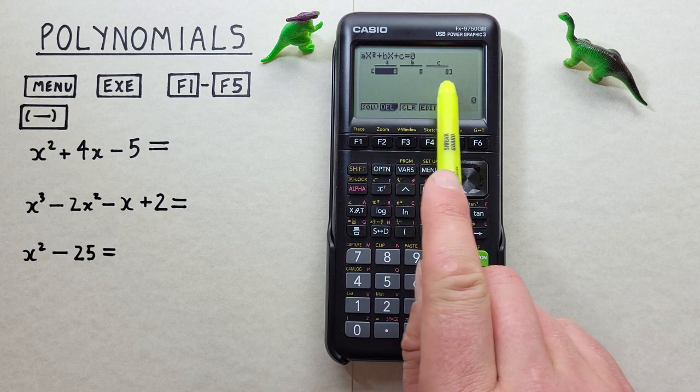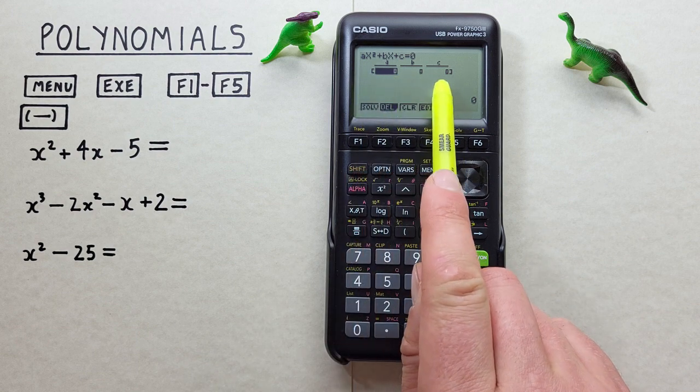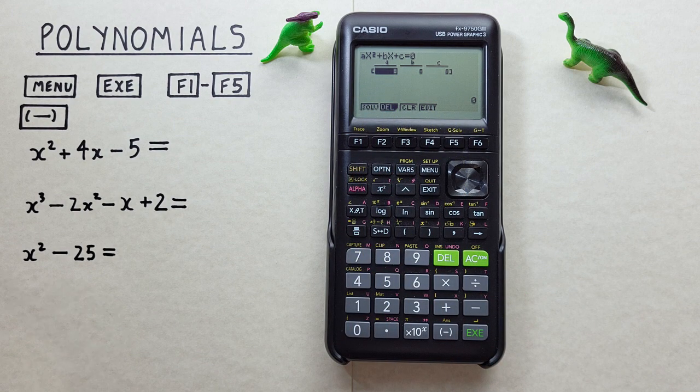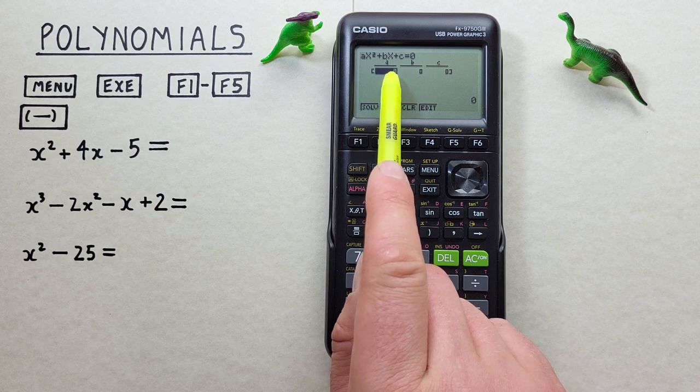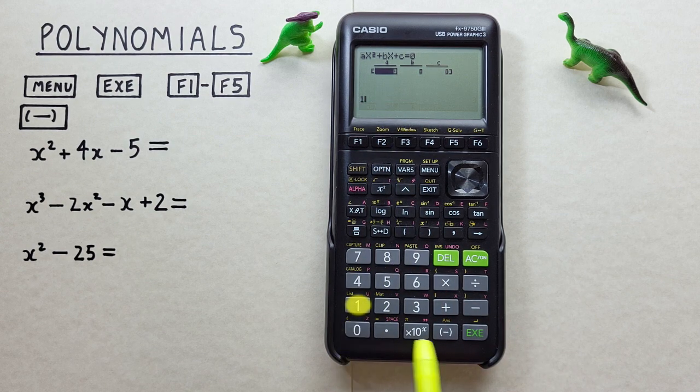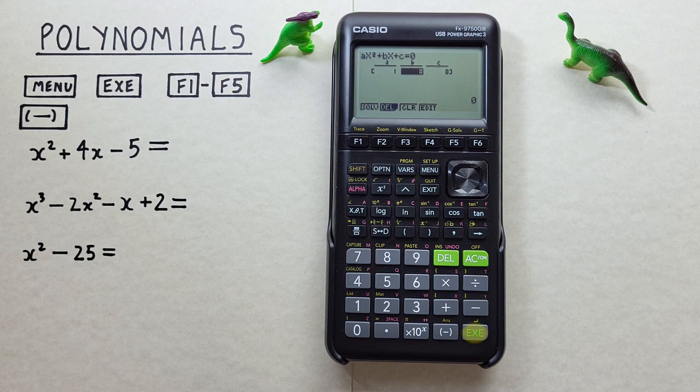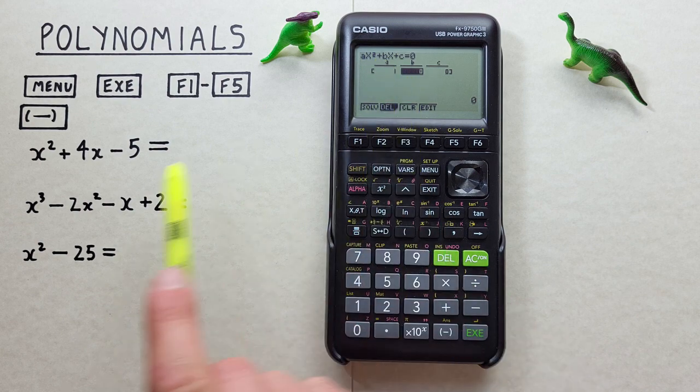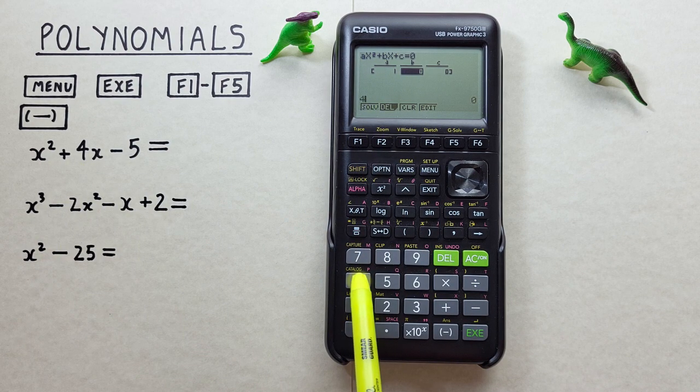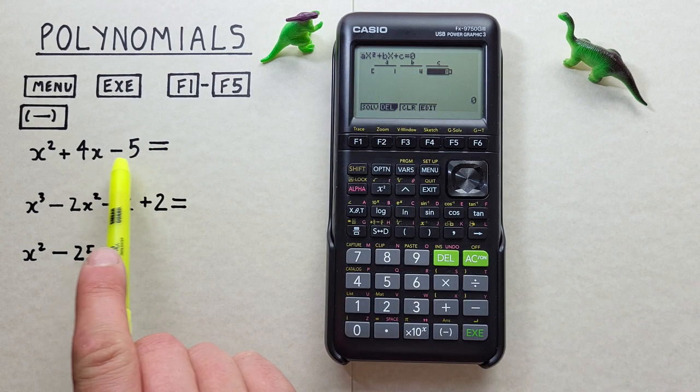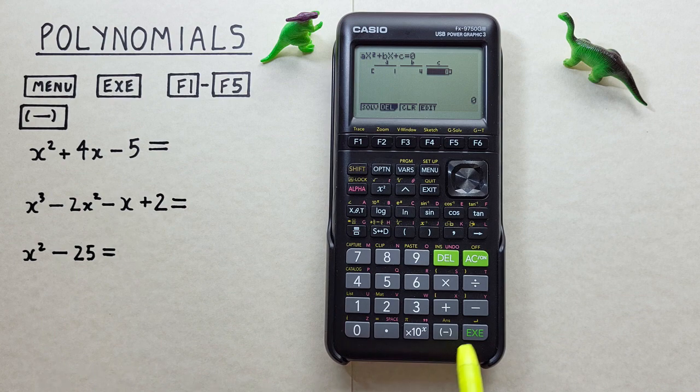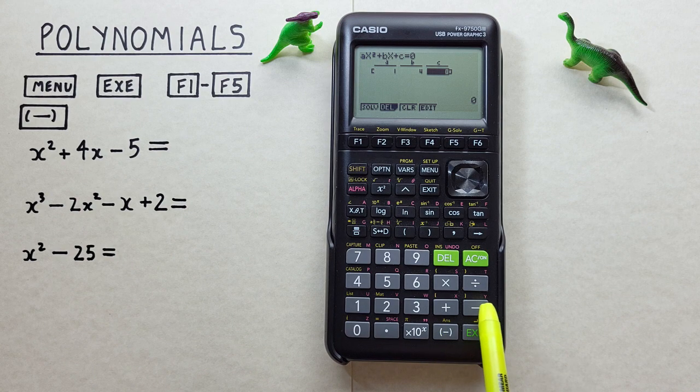That brings us to this screen where we need to fill in our blanks for our formula. First we have X to the power of 2, and if we have that X to the power of 2 with no number we assume 1. So we'll go 1 here and hit EXE. Then for our BX we have 4 and our C we have a minus 5. So for that we need to use the negative key here, not the minus, because that might give us a different result.